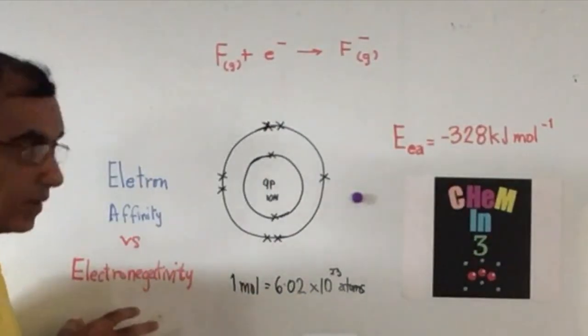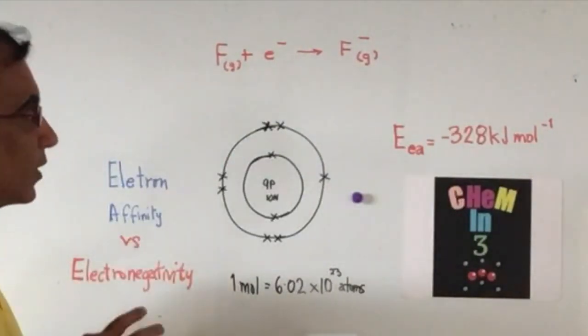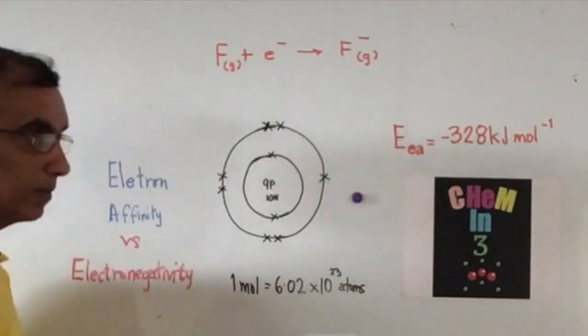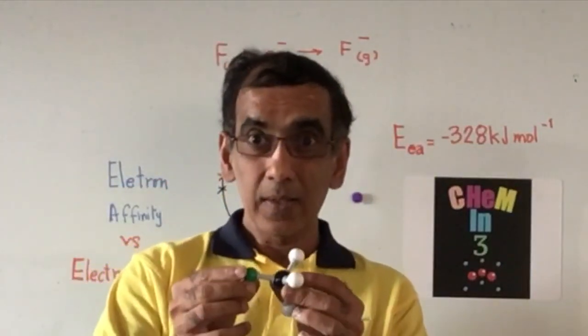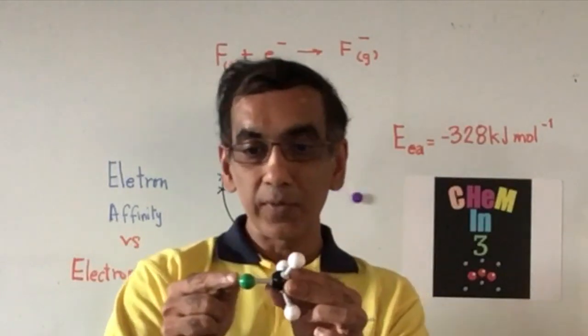The term electronegativity, while similar and very much related to electron affinity, has nothing to do with an individual atom, but it's a measure of something that happens in a covalent bond.